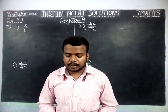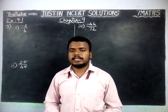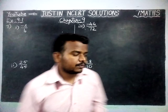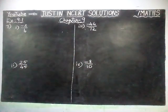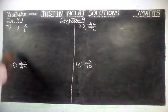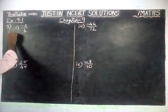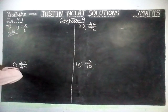Rewrite the following rational numbers in the simplest form. We have to simplify, then we have to write the simplest form. Now we are going to solve it one by one.